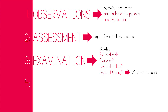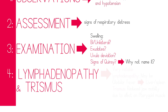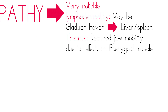Having examined the oropharynx, one should assess for lymphadenopathy and trismus. If there is a significant or notable amount of lymphadenopathy, one should consider the diagnosis of glandular fever. In this situation, one should examine the liver and spleen for hepatosplenomegaly.